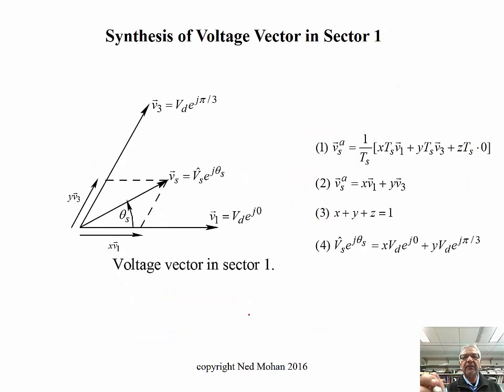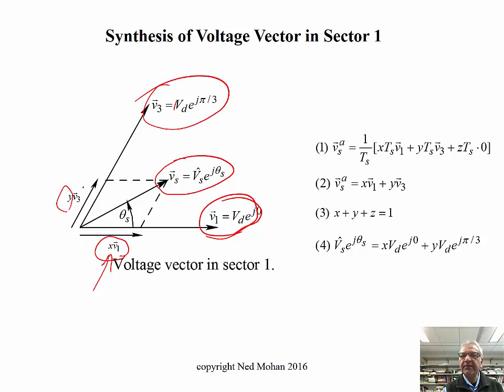So let's say that our voltage vector average is to be synthesized over here. So we can see that if you take the projection of this in this way, we have to apply this V1 basic voltage vector for an interval X. We will apply V3 for an interval Y here. So this X and Y are these intervals multiplied by the switching time period and then divide by the switching time period over here. And then we have for this time T sub S interval, we will apply zero vector. So that's multiplied by zero over here.